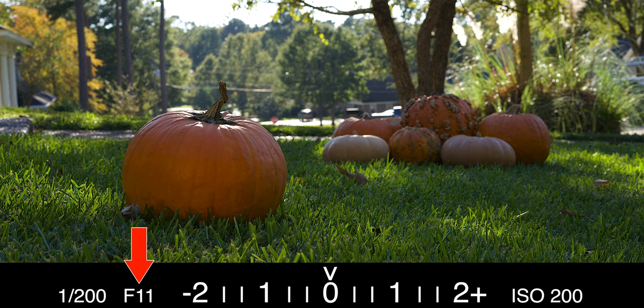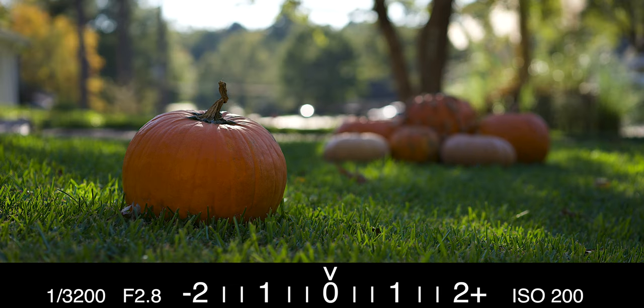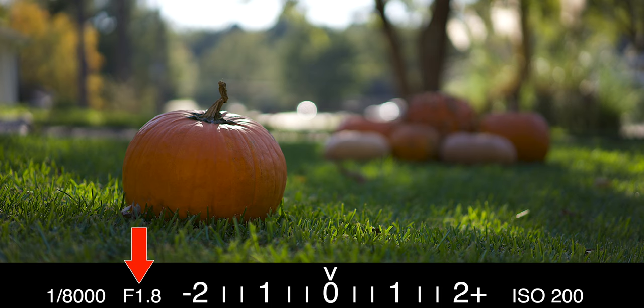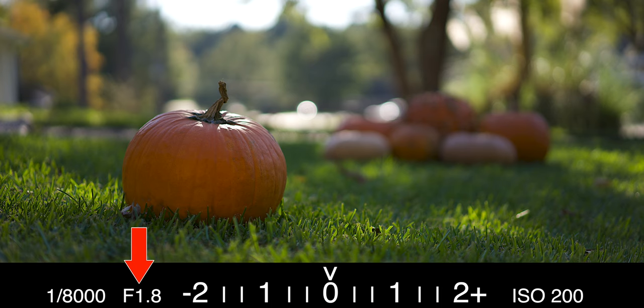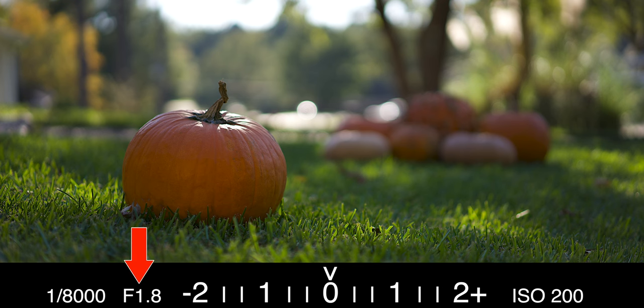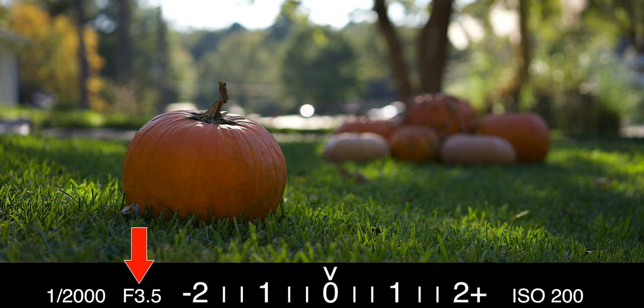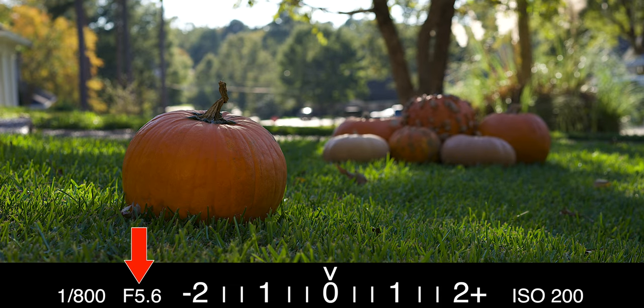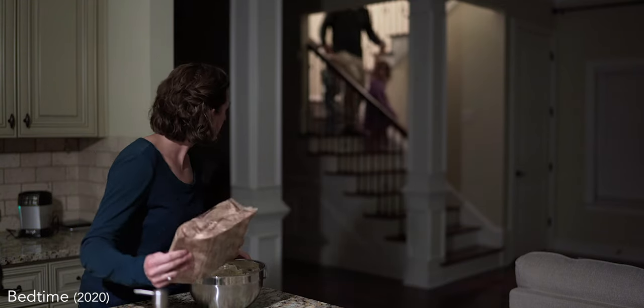The 17-55mm only lets you get down to an aperture of f2.8, which is really good and will give you a nice shallow depth of field, but the 18-35mm gives you a maximum aperture of f1.8, which is an extra 1.3 stops of light as well as an even shallower depth of field. Both of these lenses give you a constant maximum aperture throughout the entire zoom range, unlike cheaper kit lenses that start at f3.5 at 18mm and go all the way up to f5.6 at 55mm, which is very limiting on your creativity. The lower the maximum aperture, the shallower you can make the depth of field, giving you a lot more control over the style of your shots.